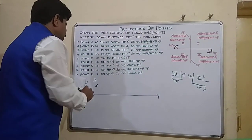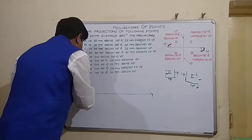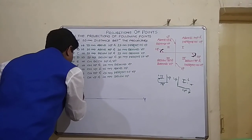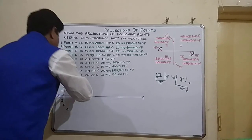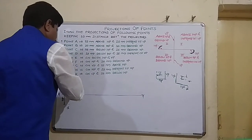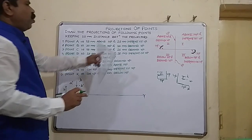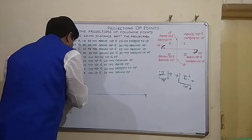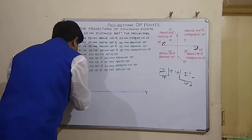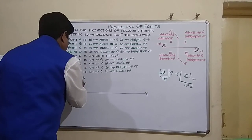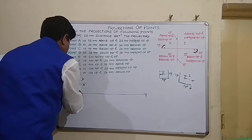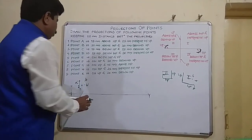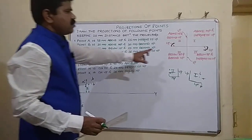Now I can show the dimensions. B dash is 20 above HP, so it is 20. And B dash is 30 behind VP, so likewise show 30 behind VP. Both projections are coming above XY because the condition is second quadrant.